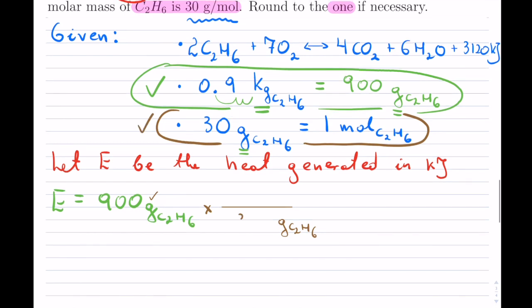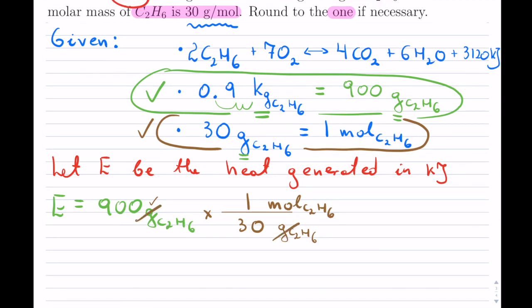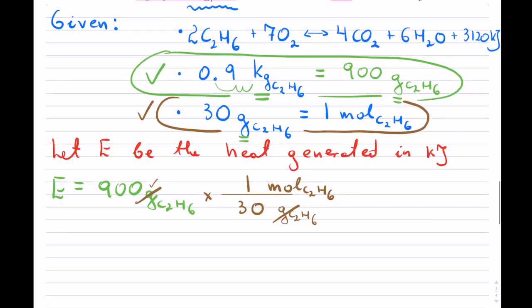And now I notice that my last given right there. So this one is 30 grams. And we put the mole of C2H6 on top. So they always come as a pair. So if you put one of them at the bottom, the other one will have to go on top. So that cancels my grams of C2H6.